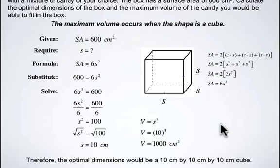Therefore the optimal dimensions of this box is going to be a cube that's 10 by 10 by 10, and it'll give you a maximum volume of candy of 1000 centimeters cubed.